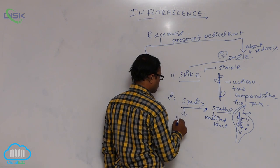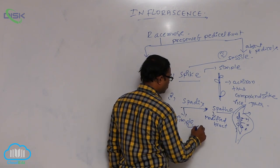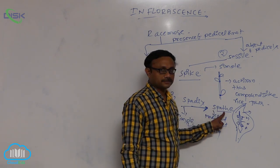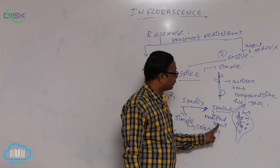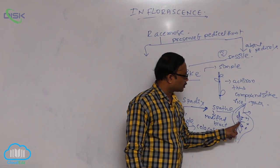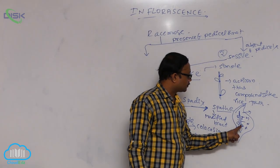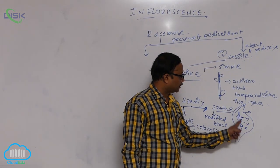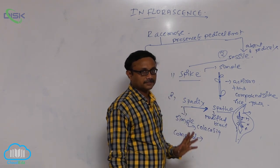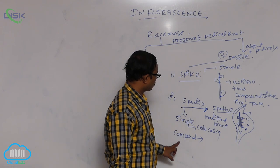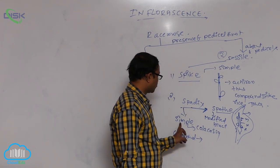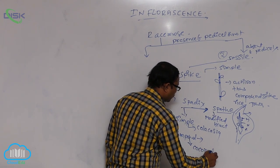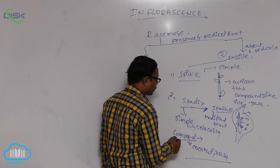Spadix is two types: simple and compound. On the floral axis, sessile flowers are arranged in acropetal arrangement; they are unisexual and covered by the spathe — that is known as spadix. Spadix: three types of unisexual flowers arranged acropetally — at the base female flowers, at the middle neutral flowers, above that male flowers — inflorescence covered by modified bract. Simple spadix example is Colocasia; compound spadix (having branches) examples are coconut and Musa (banana). Both are examples of compound spadix.